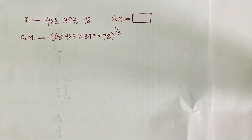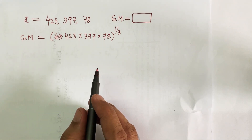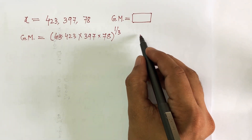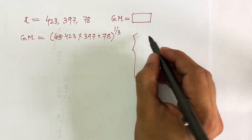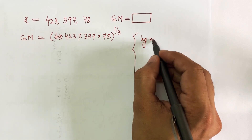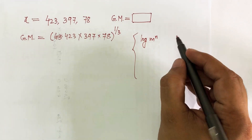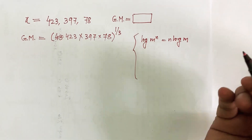If you have a scientific calculator, you can simply multiply them, raise to the power 1/3, and get the answer easily. But let's see the situation when you don't have one and have to apply log. I'll discuss two fundamental principles of log - a brief crash course. If you have log of m raised to the power n, it can be written as n·log(m), meaning the power comes first.